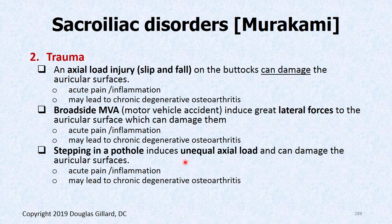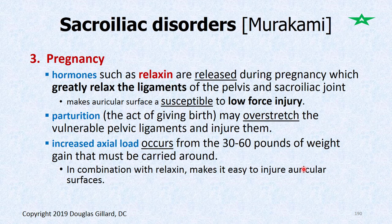Pregnancy is hard on the SI joint. Hormones like relaxin loosen the ligaments of the pubic symphysis and also relax the SI joints, making them susceptible to lower-force injury. Even at birth, the SI joints can be damaged — one example is a woman whose SI joints dislocated during her third birth, taking about a year to recover. Carrying 30 to 60 pounds of extra abdominal weight can also wear the joints out.